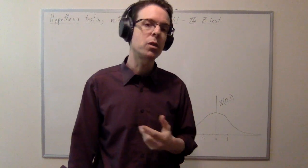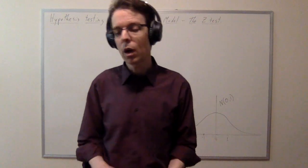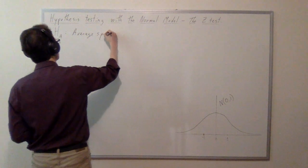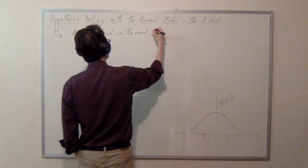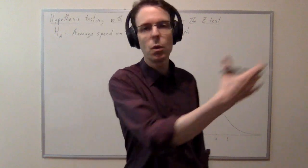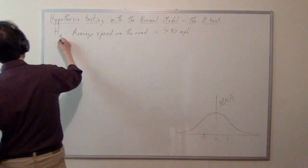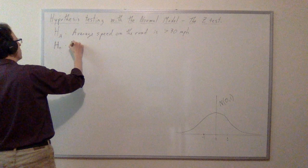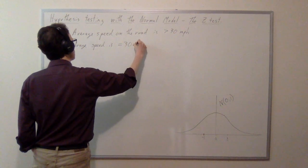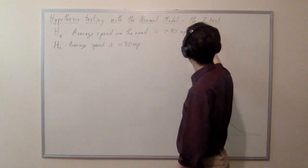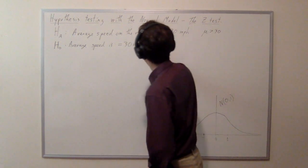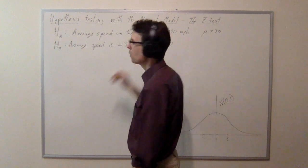If people on average are going faster than 30 miles an hour, that might be a big problem. So the alternative hypothesis is that the average speed on the road is greater than 30 miles per hour. The null hypothesis is the contrary: that the average speed is exactly equal to 30 miles per hour. In notation, the alternative hypothesis states mu > 30, and the null hypothesis says mu = 30, and we're going to let them fight it out.